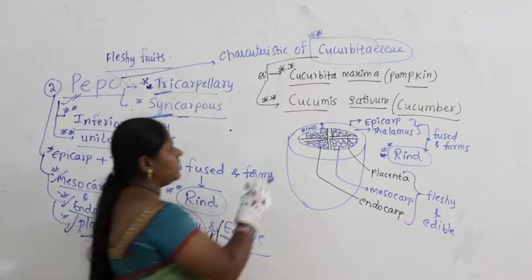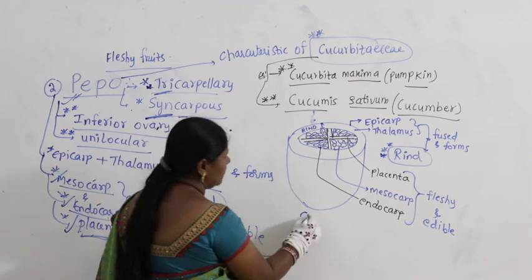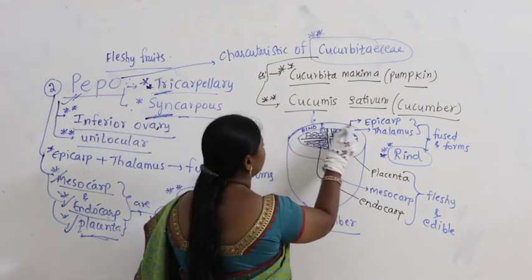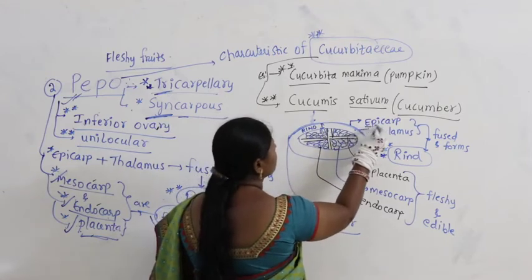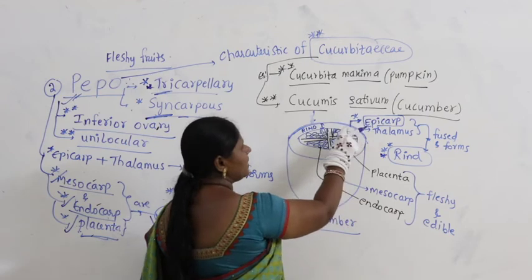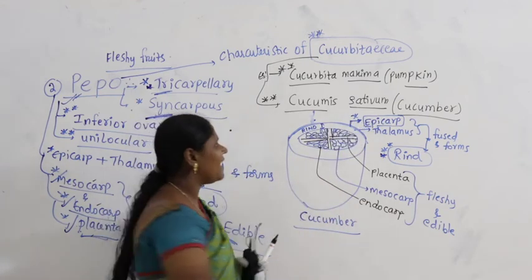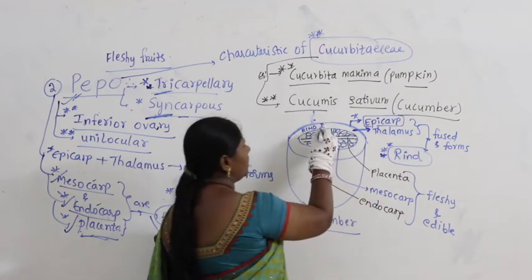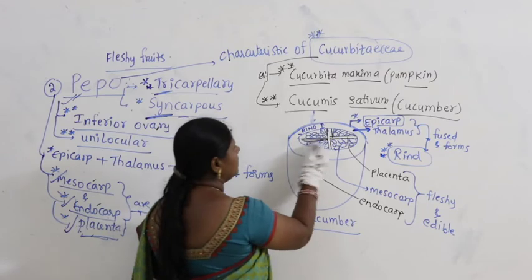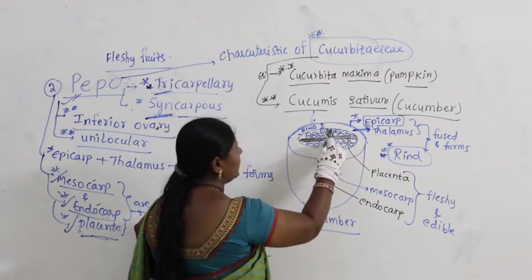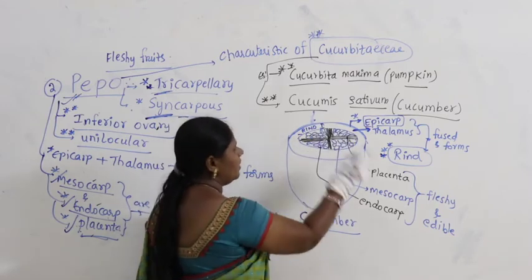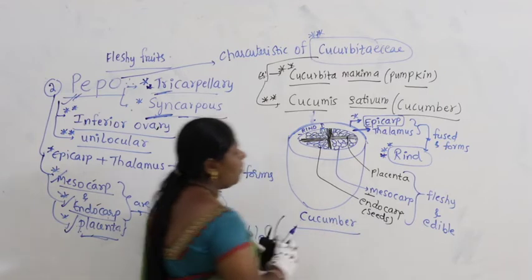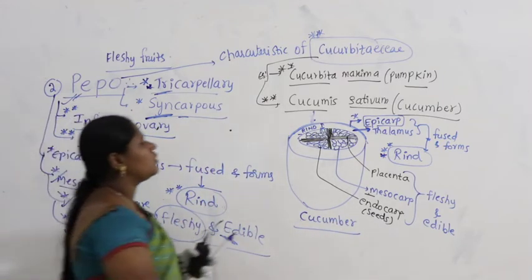This is cucumber — Cucurbita or Cucumis sativus. The outermost layer is epicarp, fused with thalamus to form the rind. In the centre, the white-coloured axis is placenta; surrounding it is mesocarp, and seeds within are endocarp. All three are fleshy and edible. The type of placentation is axial placentation.